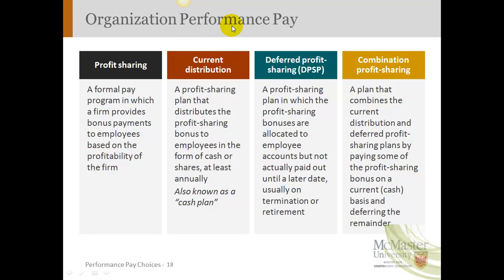Now for the third type — we've talked about individual and group. Let's look at organizational performance pay systems. The most popular is profit sharing, whereby the company provides a bonus payment to employees based on how profitable the company was. Examples of profit sharing programs could include current distribution, where whatever amount of profits the company splits with the employees is given back to them in cash, maybe in that quarter or at the end of the year.